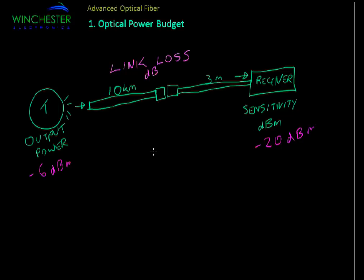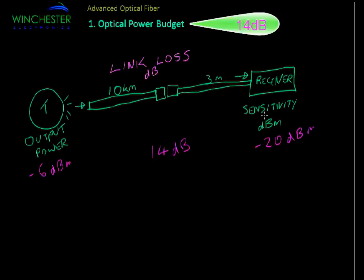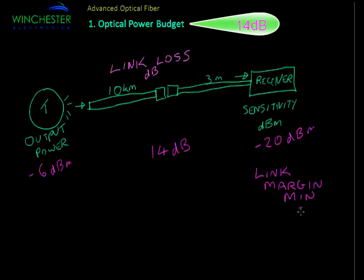The power budget is the maximum amount of loss we can have in our link and still have a receiver operational. Of course we need some margin to make sure we're not operating right at the limit of the receiver. That margin is usually 3 dB, so our minimum link margin is 3 dB. We can then calculate our link loss and see where our link margin ends up.